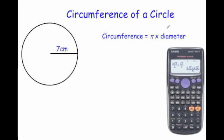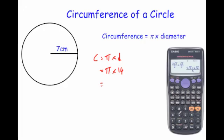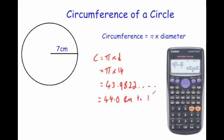Let's look at another question. Here we have a circle where the radius is 7. Since the radius is 7, the diameter — the whole way across — is 14. So we do pi times 14. On the calculator, press shift and the centre button to get pi, then times 14. The answer is 43.9822..., and the 8 rounds the 9 up to 10, giving 44.0 centimetres to one decimal place.